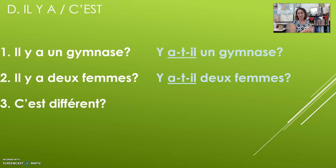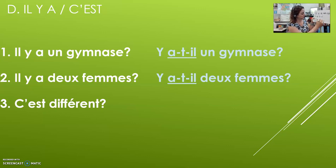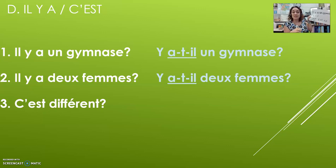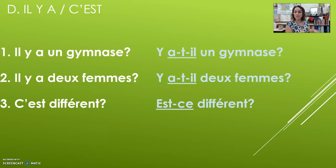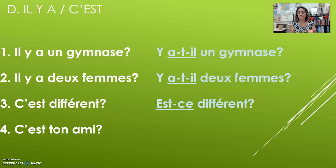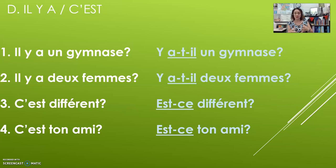And lastly, the phrase «c'est» — it means «it is». When you break it up, it's the word «ce» and the verb «est». When you flip them it becomes «Est-ce». So if I want to say «Is it different?» formally: «Est-ce différent?» And «C'est ton ami?» — is that your friend? Becomes «Est-ce ton ami?» Hopefully these exercises explained how to flip and invert these phrases. Let me know if you have questions — au revoir!